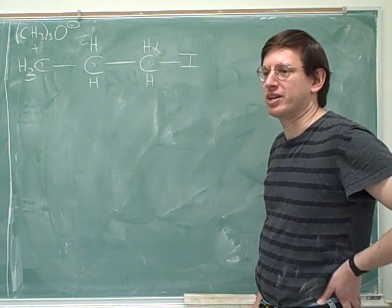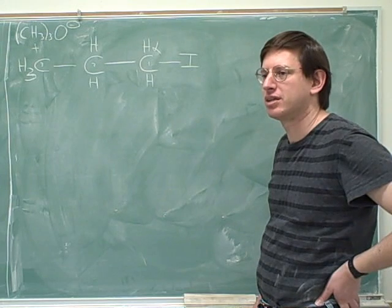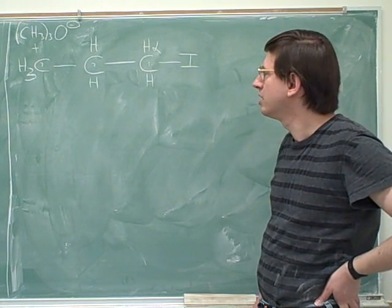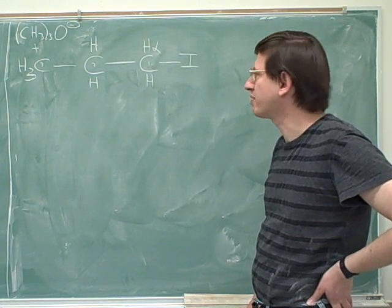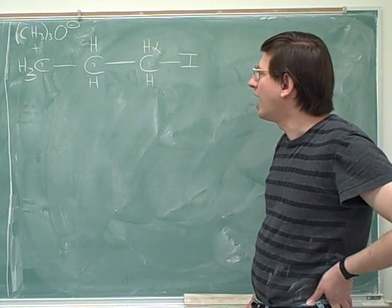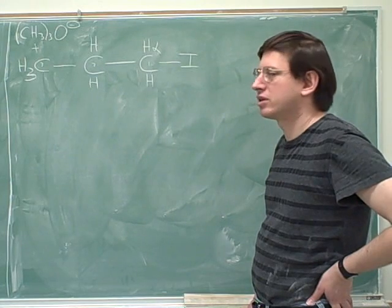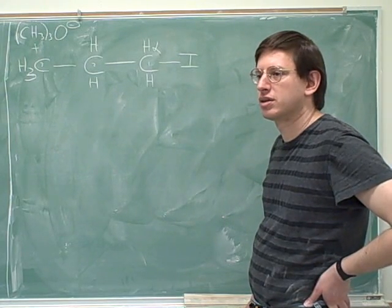All right, now what type of mechanism is going to happen here? Let's try to use the table on page three. So which row are we in on the table on page three? Primary, secondary, or tertiary? Primary. Primary. We're in the primary row. Primary, unhindered.